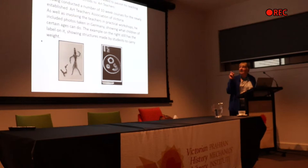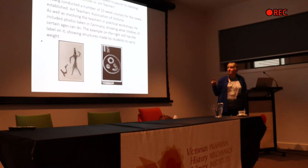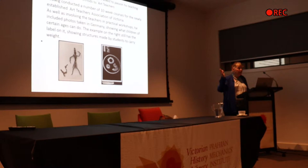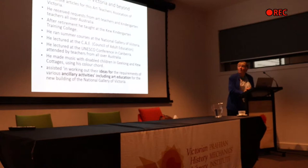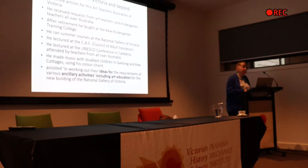He was asked to conduct courses, so he conducted 10-week courses for art teachers. He used some of his photos from Germany — you can see labels on them showing the sort of things students could do at certain ages. He introduced teachers to a whole lot of new things. He wrote articles for the Art Teachers Association, received many requests for advice, ran summer courses at the National Gallery, lectured at the CAE covering colour theory and much more. He also lectured at the UNESCO Conference.